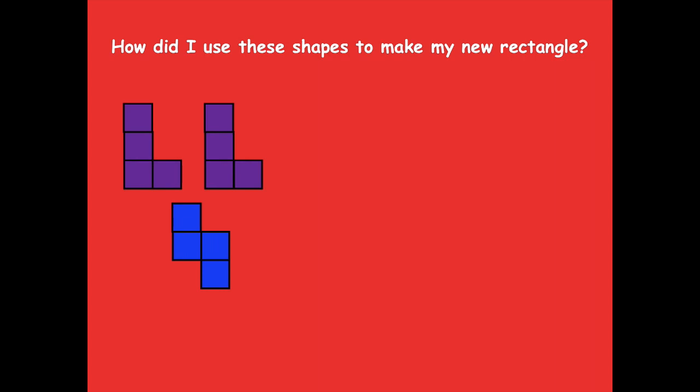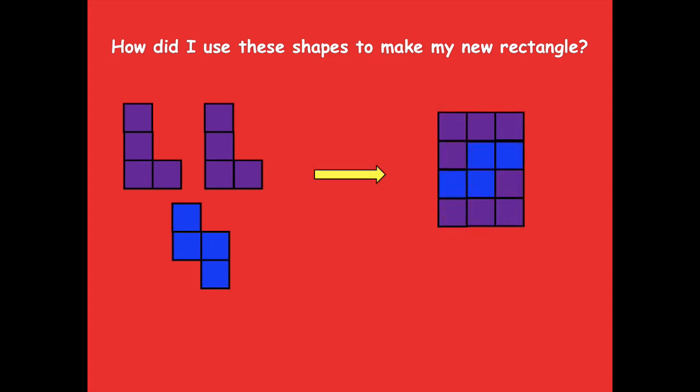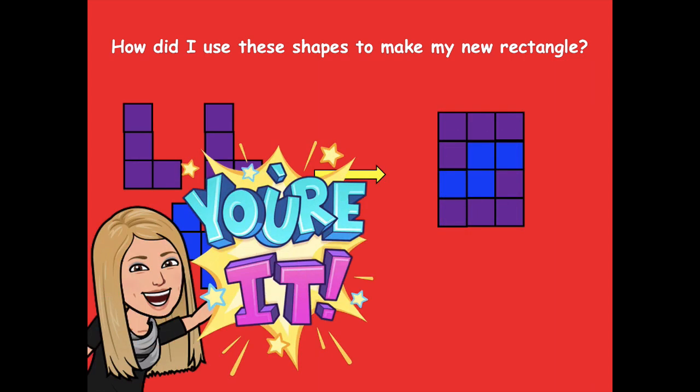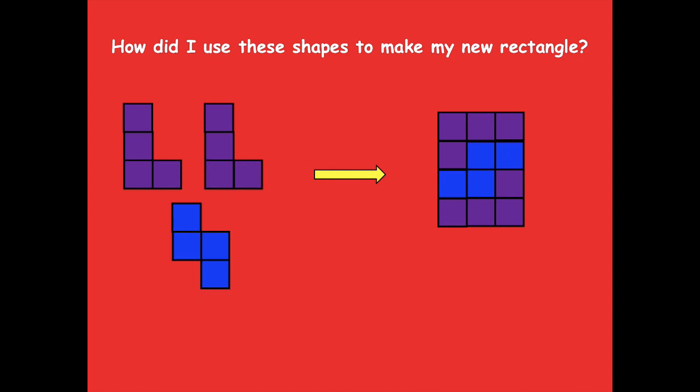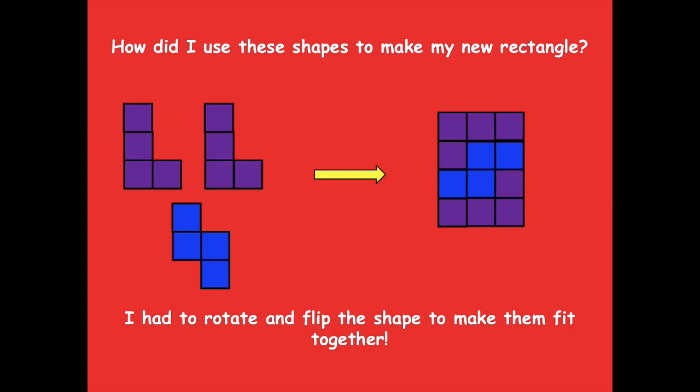How did I go from these three shapes to this? Pause the video and analyze how I did that, because they don't look the same from the left side to the right side. What did I have to do to make those shapes fit together? I didn't cut them apart. Click play when you're ready. I had to rotate and flip the shapes to make them fit together.